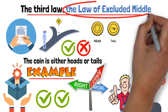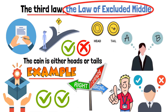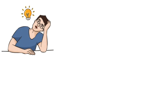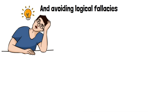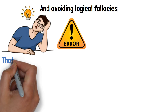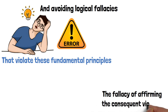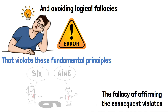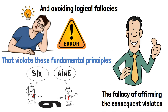According to the law of excluded middle, one of these options must be true. Understanding the laws of logic is crucial for identifying and avoiding logical fallacies, which are errors in reasoning that violate these fundamental principles. For instance, the fallacy of affirming the consequent violates the law of non-contradiction by accepting contradictory statements as valid.